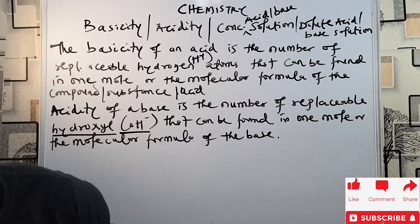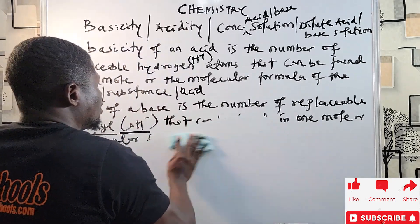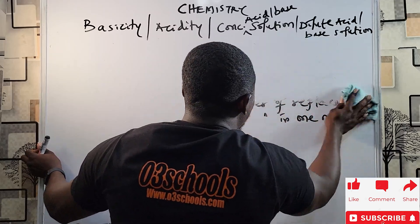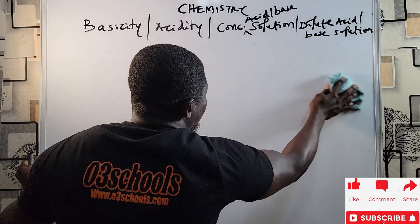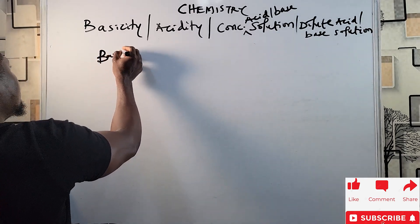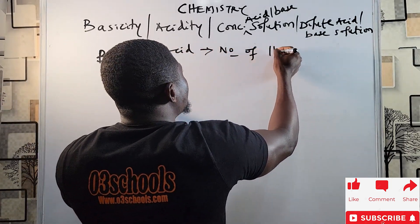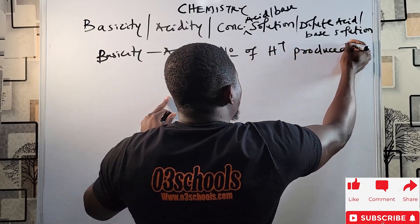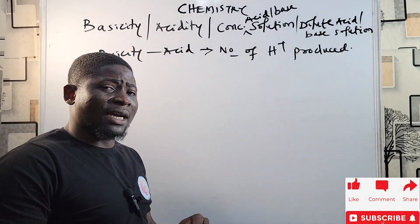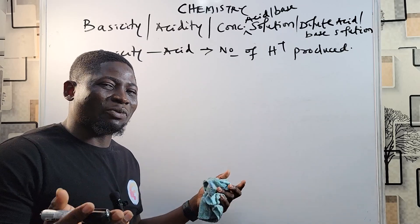To drive this point home, let me show you types of acids, their basicity, and examples. When basicity is mentioned, we are talking about an acid and the number of hydrogen ions produced. So if you see a question like 'what is the basicity of H₂SO₄?' in your JAMB past questions, it's a very simple question you must get right.